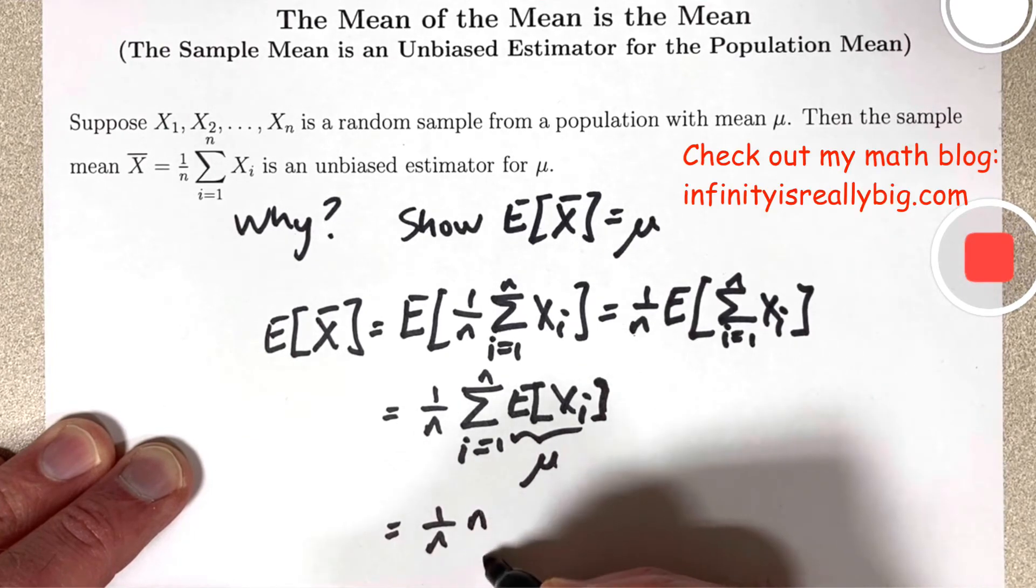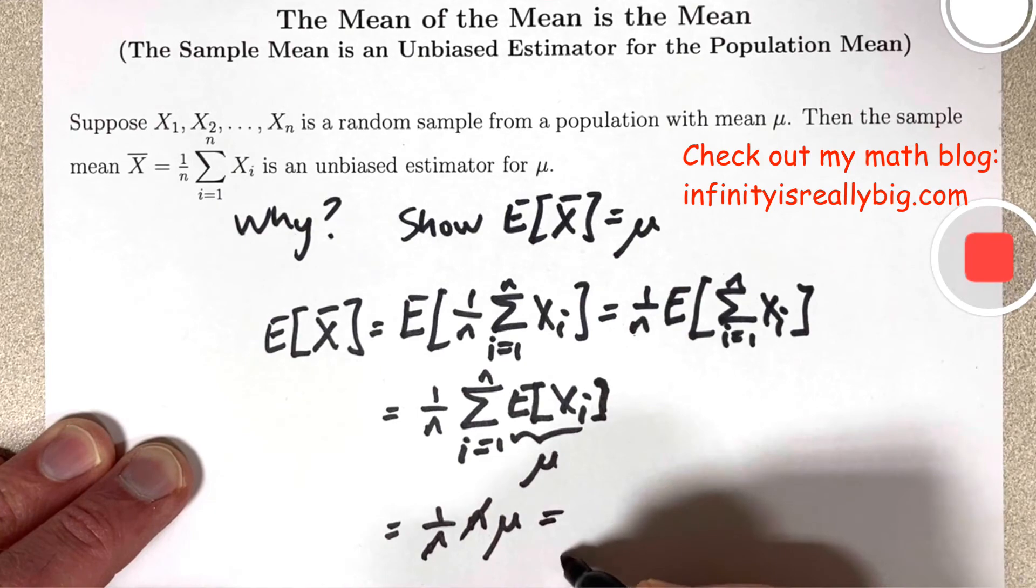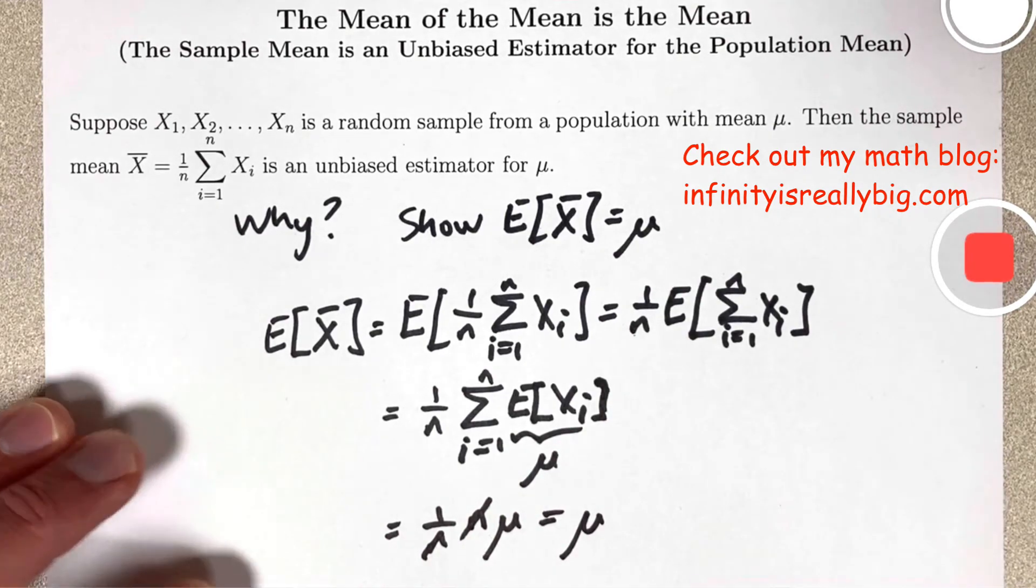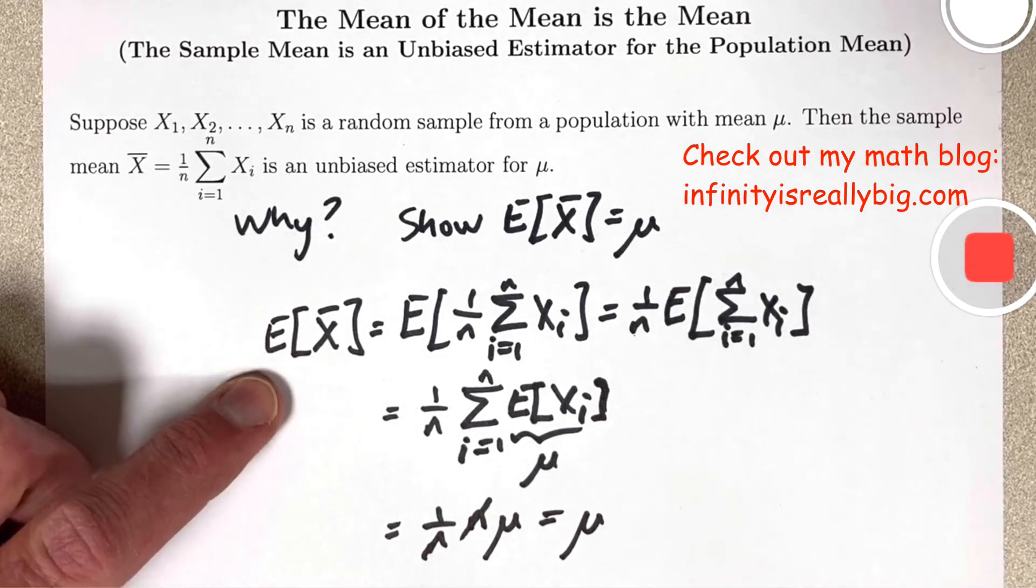This is n times mu. The n's cancel, leaving you with mu. Therefore, the mean of the mean is the mean.